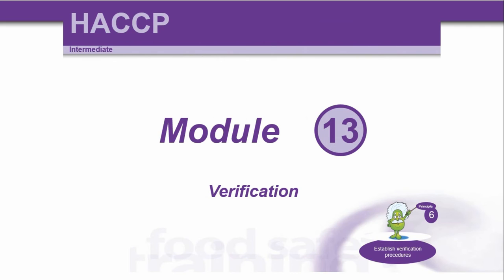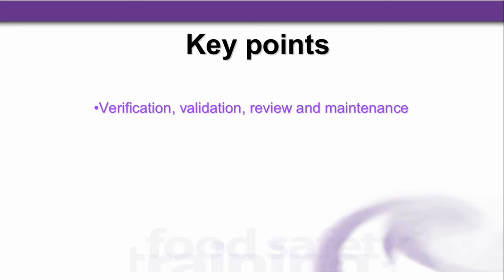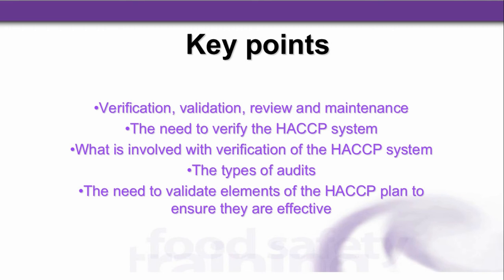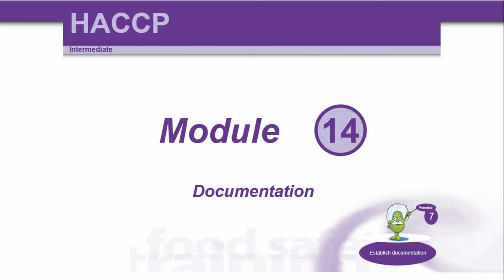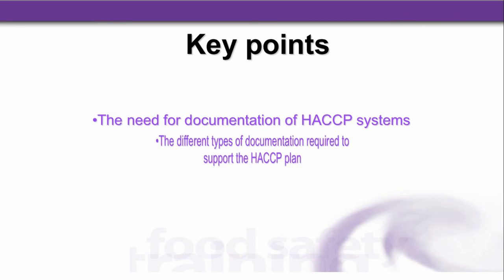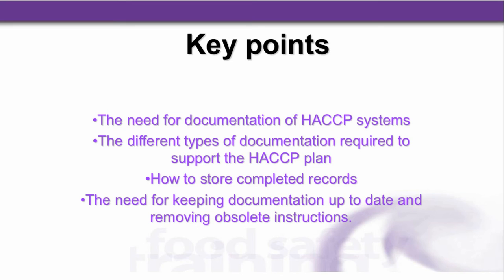Module thirteen is Principle 6 of HACCP to establish verification procedures. Key points of verification included verification, validation, review and maintenance, the need to verify the HACCP system, what is involved with verification, the types of audits, the need to validate elements of the HACCP plan to ensure they are effective, and the need to update and maintain the HACCP plan. That took us on to the last module, module 14, documentation, which is Principle 7 — establish documentation. Key points covered the need for documentation of HACCP systems, the different types of documentation required, how to store completed records, and the need for keeping documentation up to date and removing obsolete instructions.